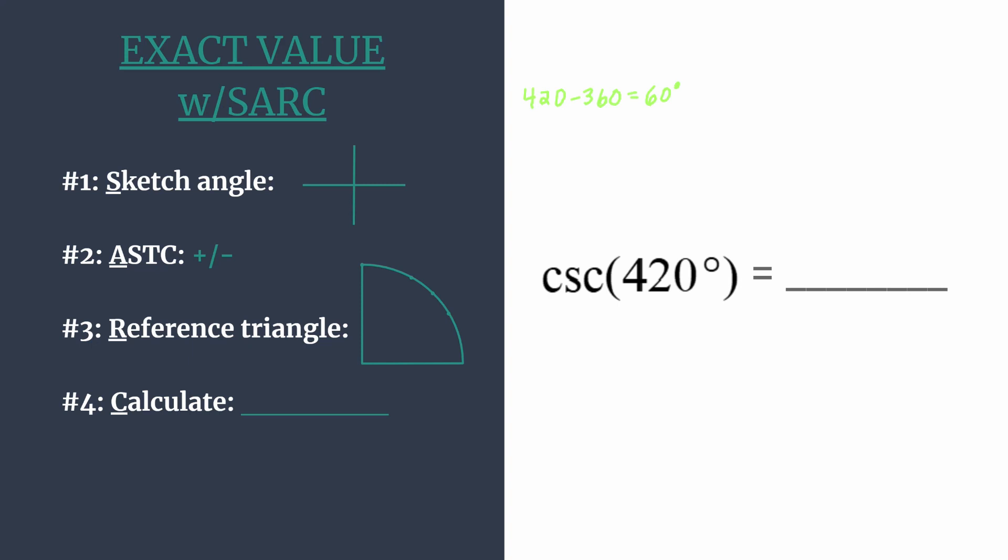So we can easily sketch 60 degrees. Here's 0, here's 90, so the terminal side for 60 degrees is in quadrant one, and that's again the same terminal side for 420. Just to sketch 420, you would draw another counterclockwise rotation to get to that terminal side.